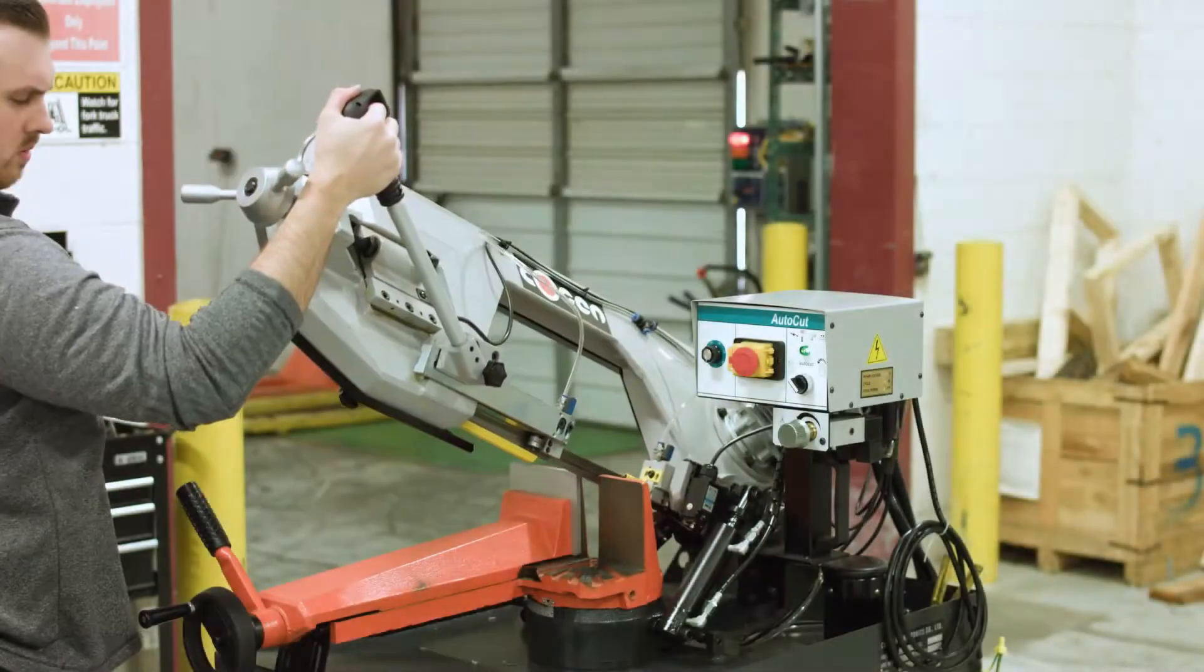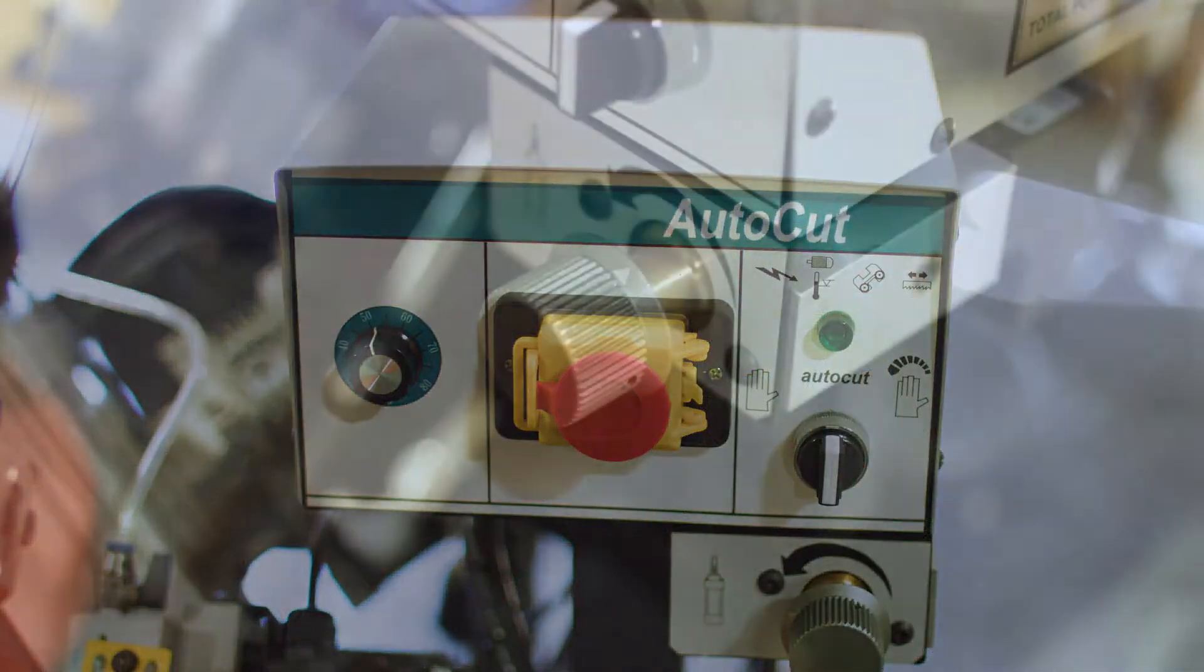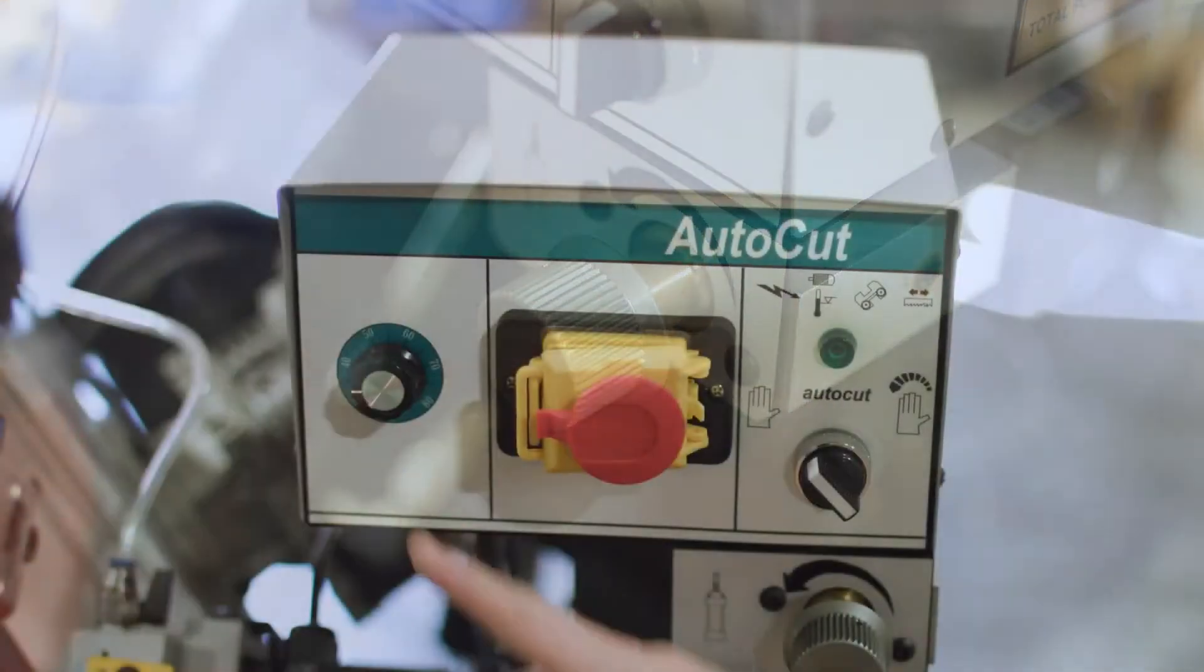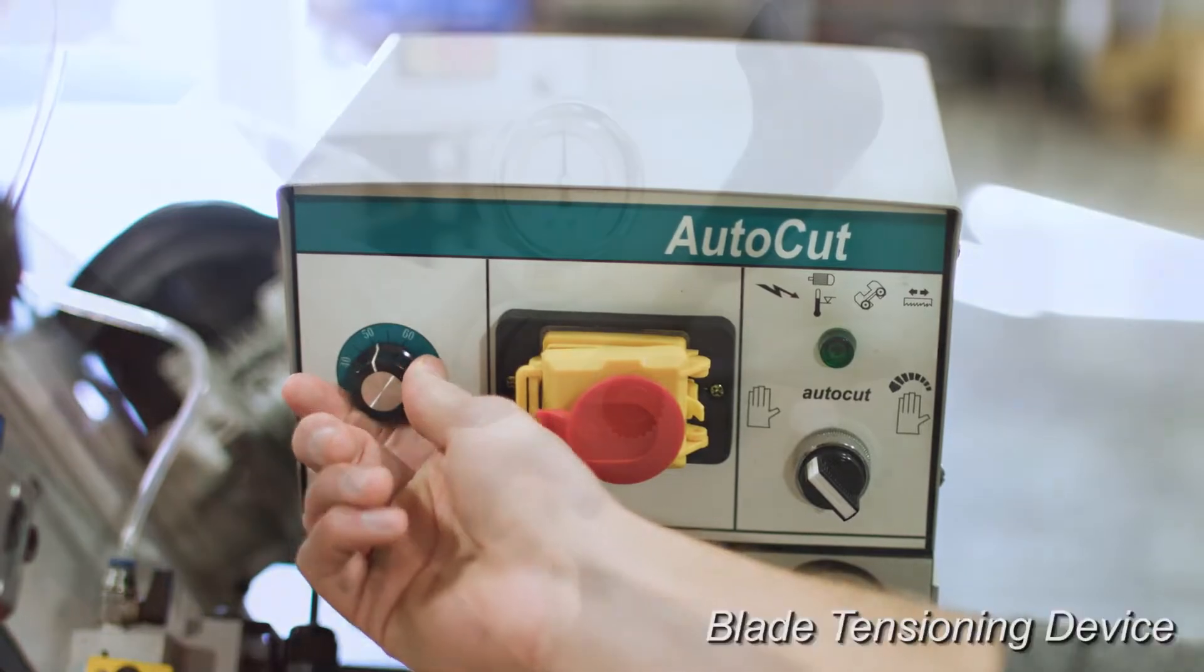Though it is a manual saw, one special feature it does include is an auto-cut mode with a large feed rate control valve. This saw allows for an infinitely variable blade speed adjustment from 125 to 250 feet per minute.